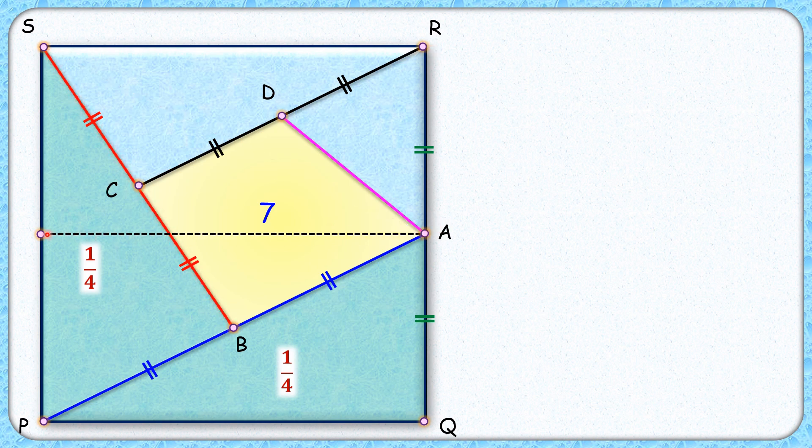For that, let's draw a parallel line from point A. Now the area of this rectangle below will be half the area of the full square. Now B is the midpoint.